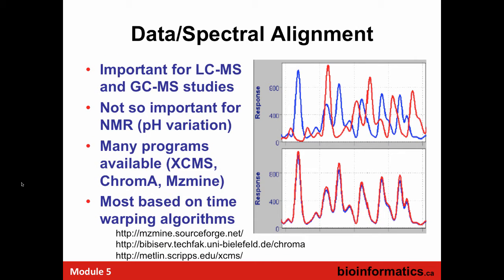We've talked about spectral alignment — that was part of the XCMS exercise. Unfortunately it wasn't working yesterday. But it is commonly done for LC-MS and GC-MS. This is necessary because columns, whether gas or liquid chromatography columns, vary over time and use, and parameters like flow rates cannot be perfectly controlled. So there'll be shifts. Through using things like time warping or other approaches, you can get the spectra aligned. That's available in XCMS, MZMI, and Chroma.